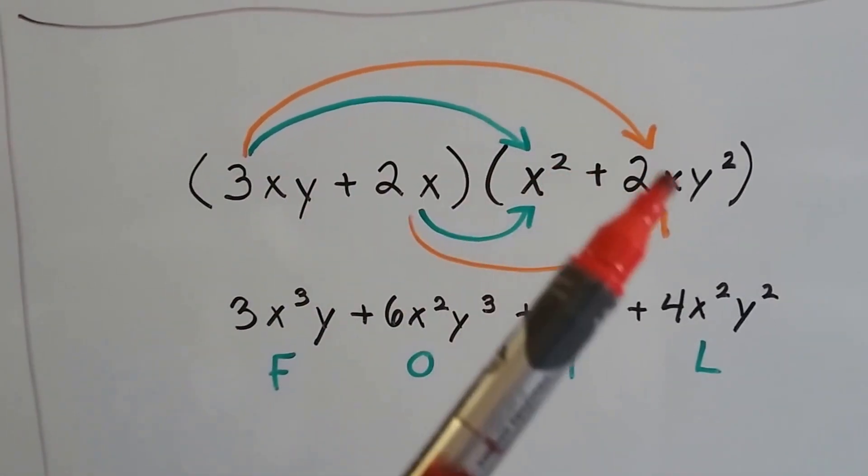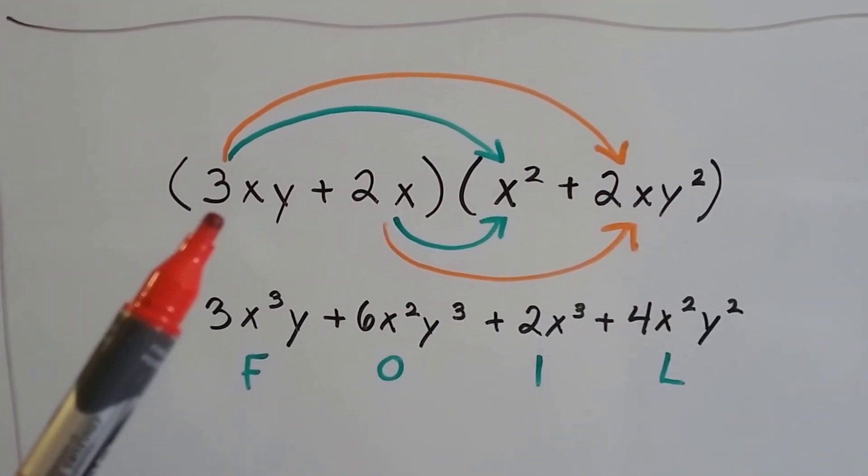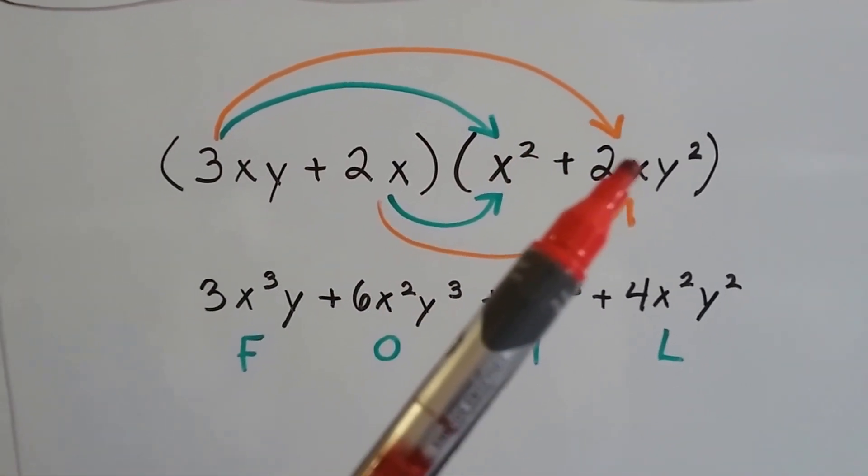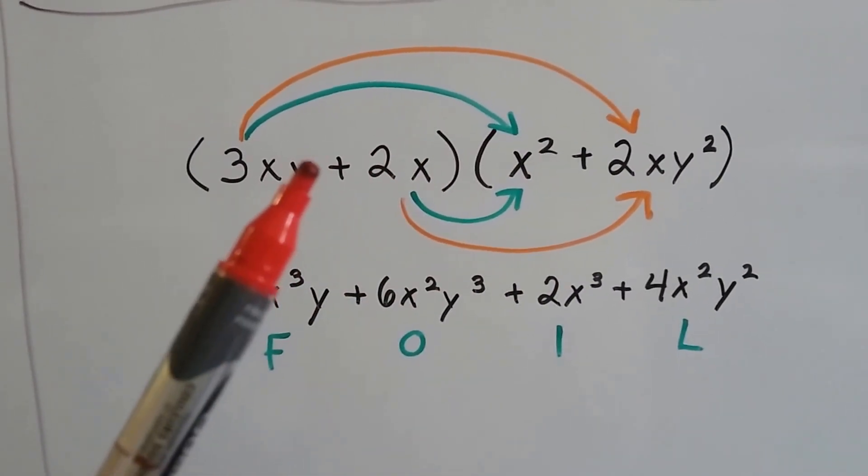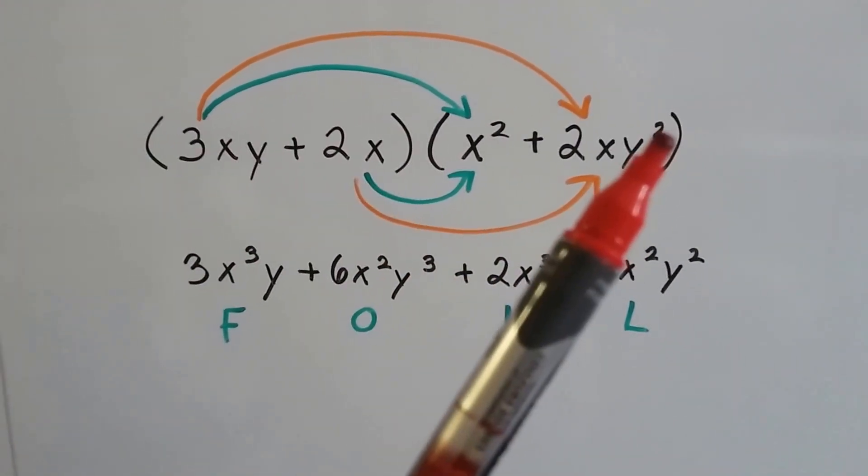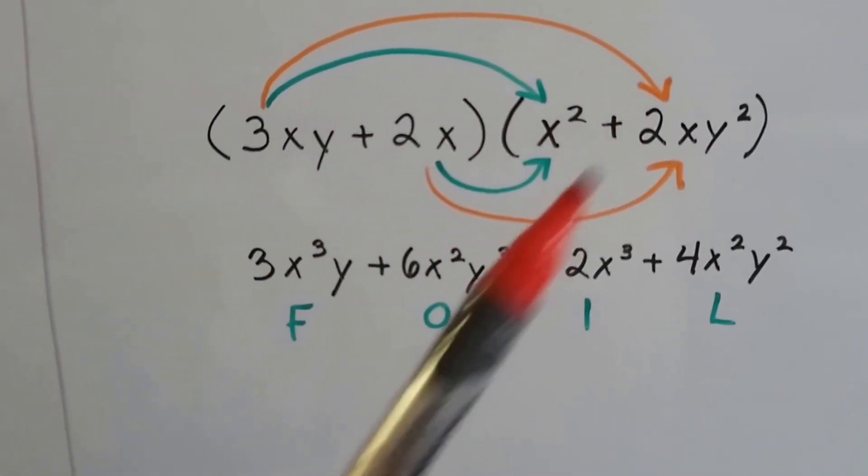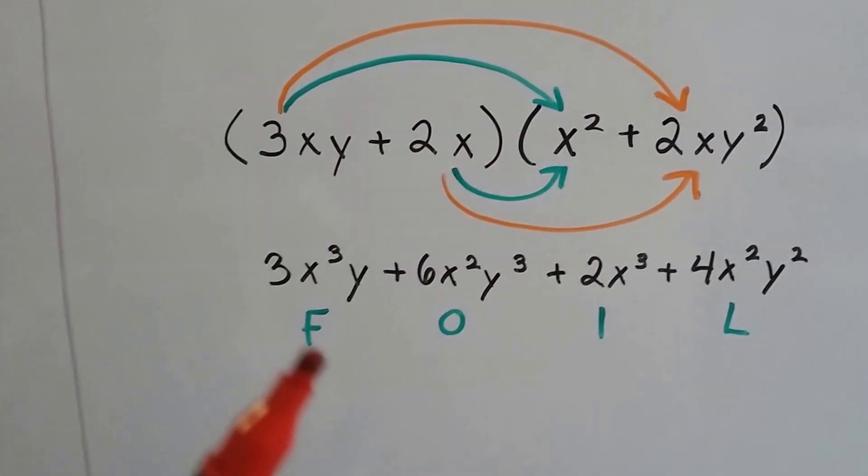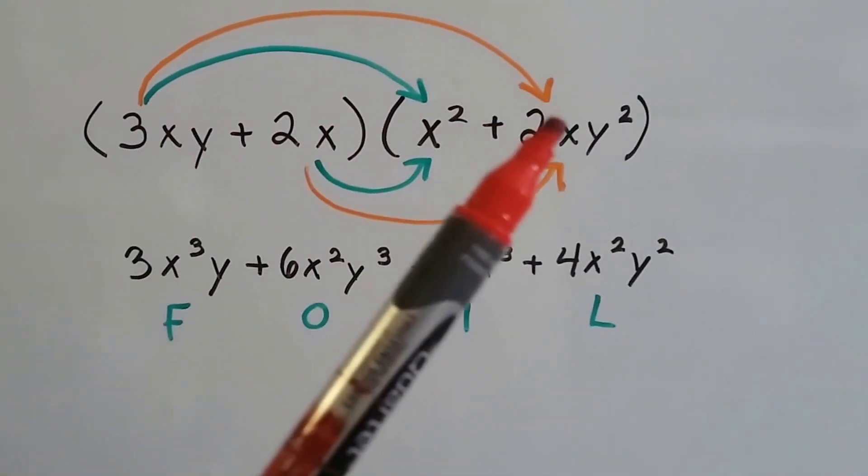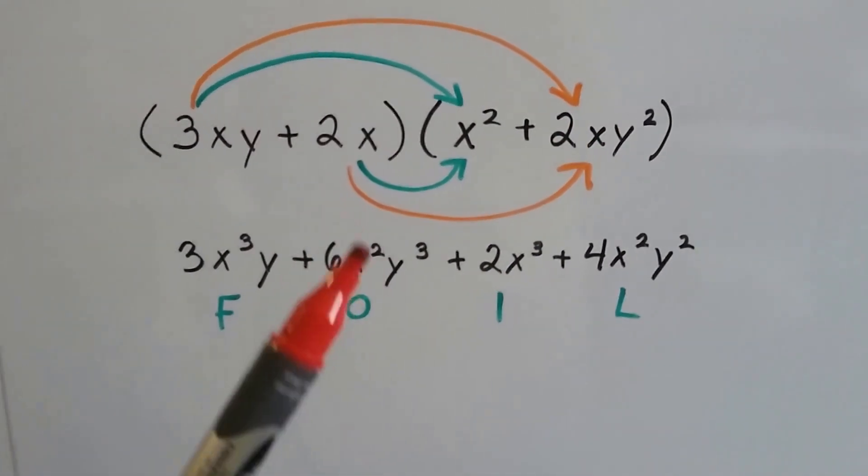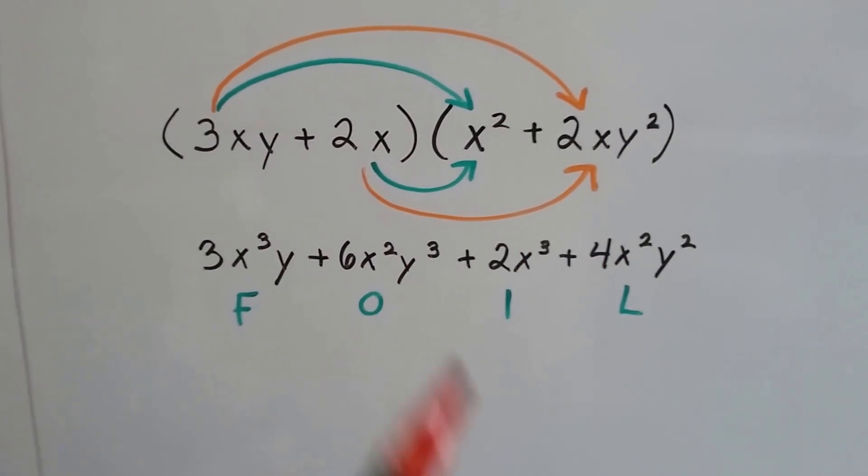Now we're going to go to the outside. So we're going to do 3xy times 2xy squared. Well, this one exponent y and this two exponent y is going to make a three. Three times two is six. And there's an x here and an x here. So that's x squared. And then we have the three exponent for the y.